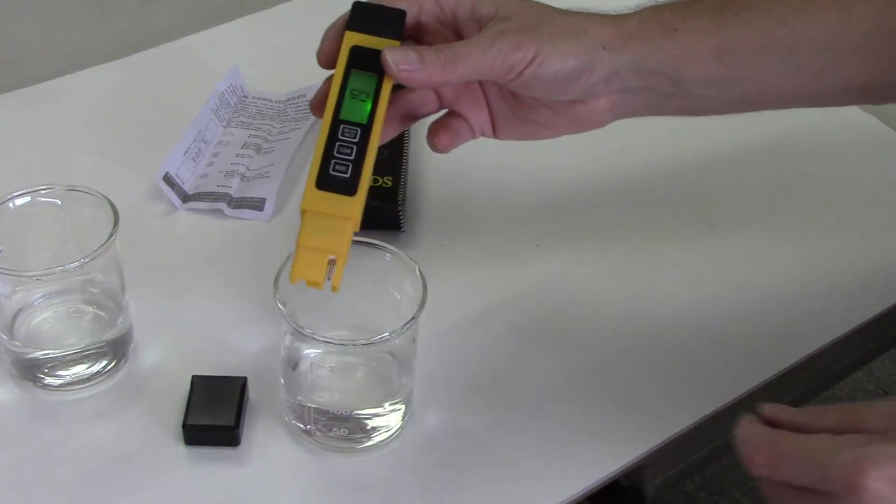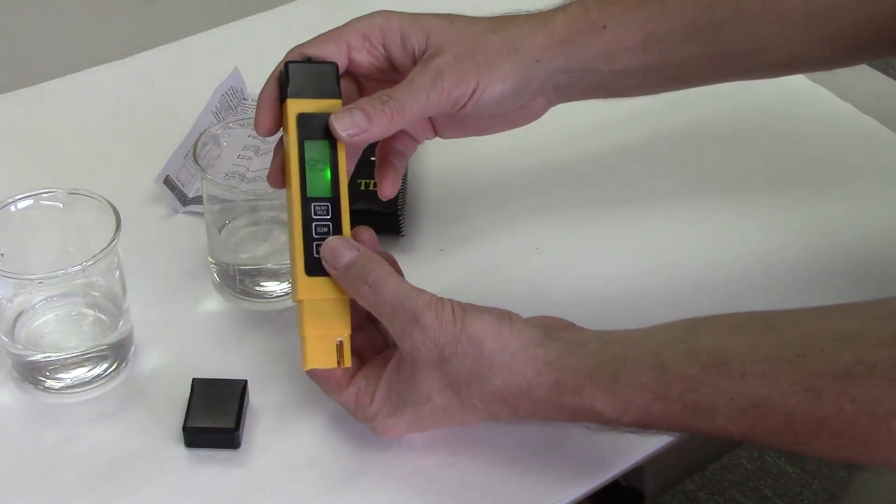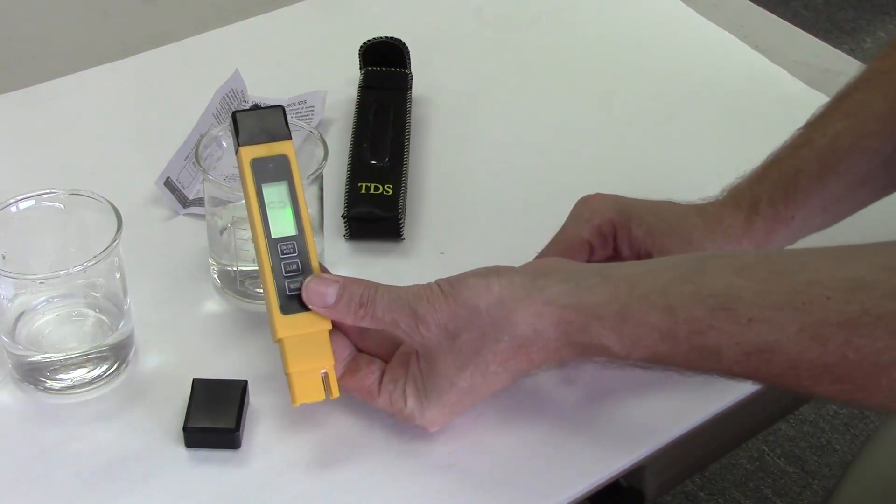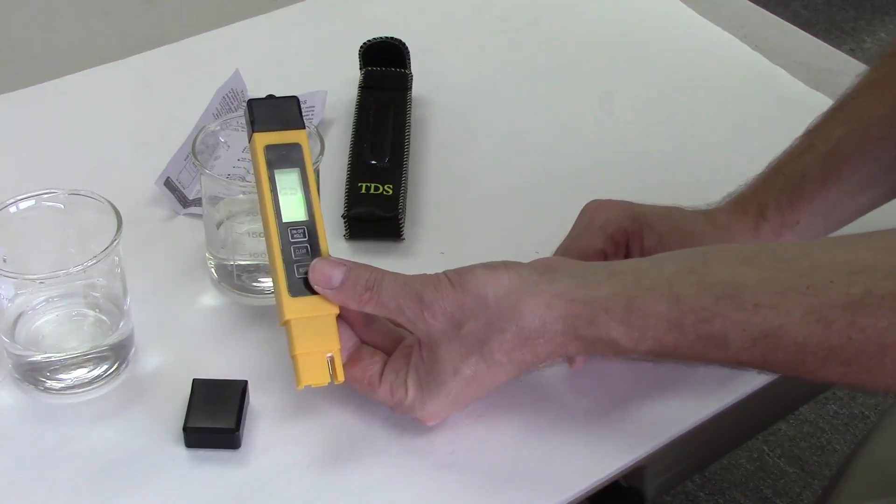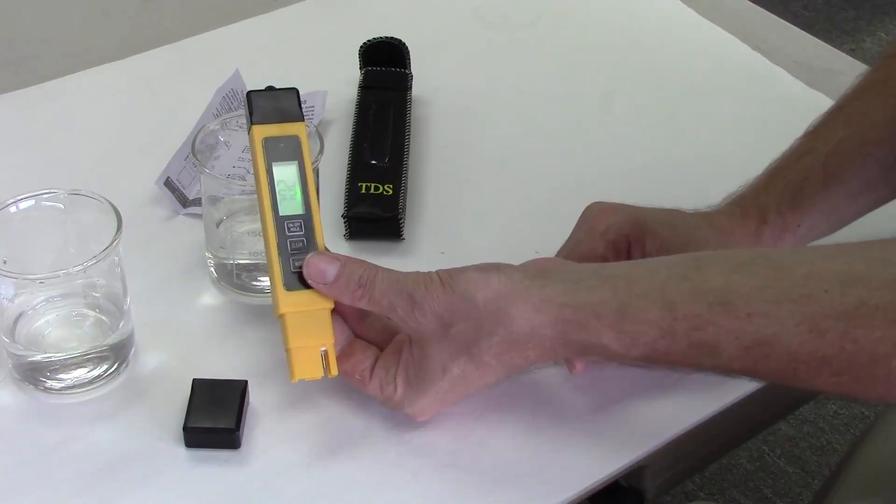That's a very low amount of total dissolved solids, as you would expect. Hitting the mode key will scroll you through the four options. You have total dissolved solids and electrical conductivity, and then you have temperature in Celsius and temperature in Fahrenheit.